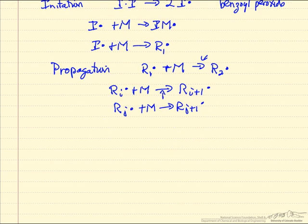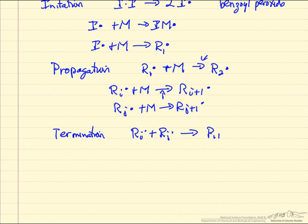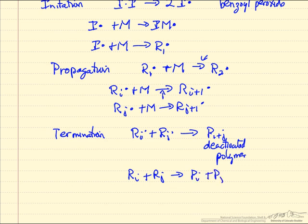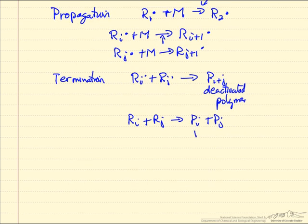So these continue to grow until typically we have termination, where we form an inactive species. For example, Ri plus Rj, two growing polymer chains or radicals, can form a polymer. We can call this a deactivated polymer in the sense that it no longer will react with the monomer. We could also get reactions where Ri plus Rj form polymer I plus polymer J. In this case, one of these, for example, would be saturated and this would be unsaturated, it would have a double bond on the end.